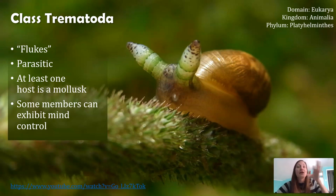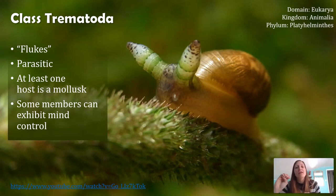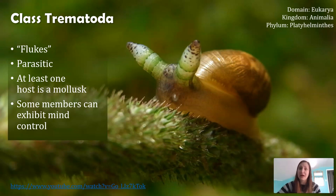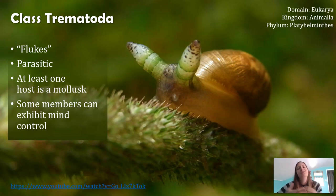Then the bird eats the snail. Inside the bird, the trematode develops into an adult and will lay eggs. Those eggs travel through the digestive system and the bird ends up pooping out the eggs, which the snail then eats. When the snail eats that poop, it takes in the eggs, the eggs hatch into larvae, and the cycle continues.